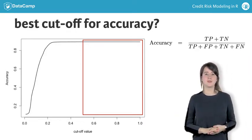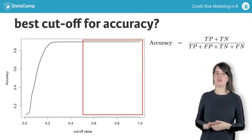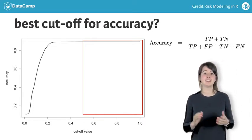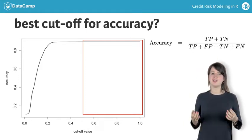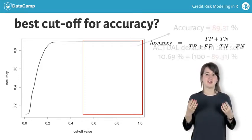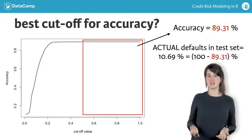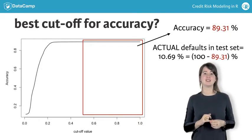Looking at the accuracy alone, you would be tempted to use a cutoff value of over 51% here, as it leads to the best accuracy. As shown before, however, the high accuracy is only due to the fact that for a cutoff greater than 51%, all cases are classified as non-defaults.